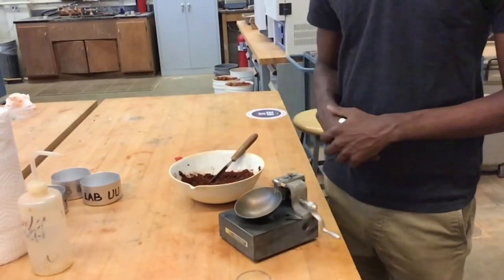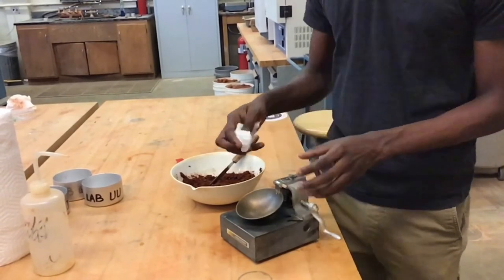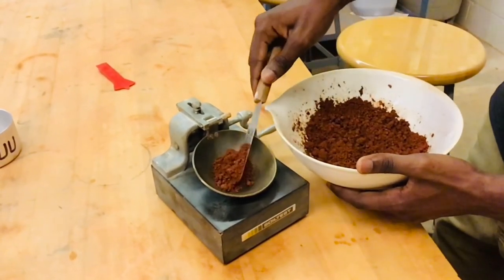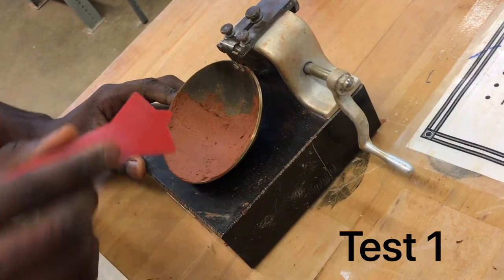Now I'm going to wipe the cap clean to make sure that it doesn't interfere with the closing of the grooves. Now I'm going to fill the cap with the sample and be able to create the groove. So we are filling in the sample. I'm going to pat the soil by using the grooving tool.